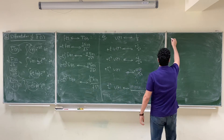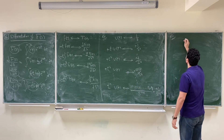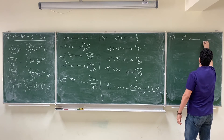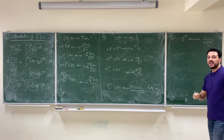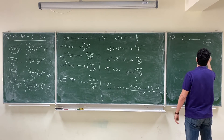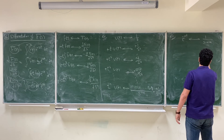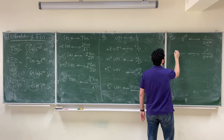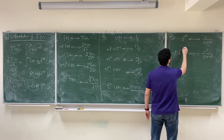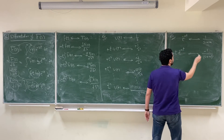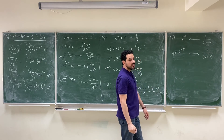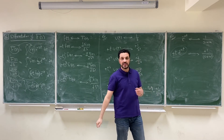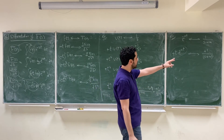Let's solve another example. We know that e^(-at) has a Laplace transform of 1/(s+a). If we differentiate in the s-domain, we get -1/(s+a)². In the time domain we multiply by -t, giving -t·e^(-at), and the negatives cancel. So we obtain the Laplace transform of t·e^(-at) as 1/(s+a)², which matches the Laplace transform tables.